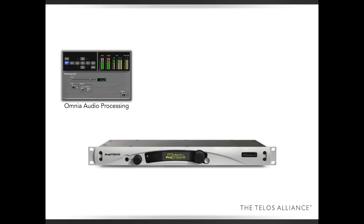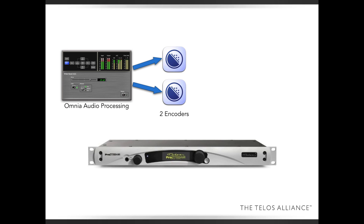Once the audio is done being processed with the Omnia audio processing, it then goes to two different encoders. The ProStream has these two encoders and they're completely independent except for their audio feed coming in. You can encode in MP3 or different flavors of AAC — like full AAC, HE-AAC, or even the very popular HE-AAC V2, which is popular for streaming because it's a low bit rate and yet sounds really good. So you have two completely independent encoders.